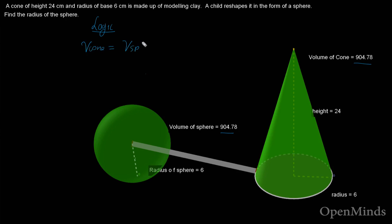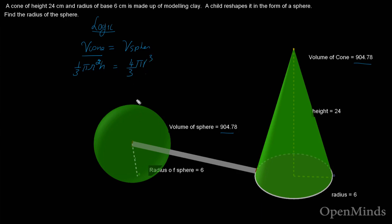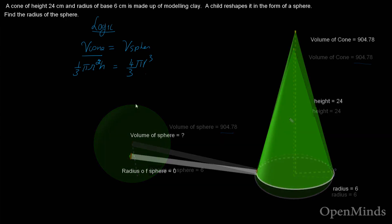We know the formula for the volume of a cone: one-third times pi times r squared times h. And the volume of the sphere is four-thirds times pi times r cubed. Those are the two formulas we'll be working with.